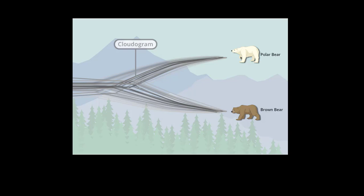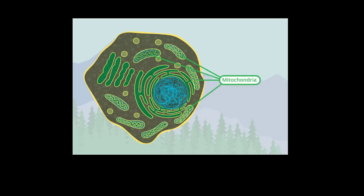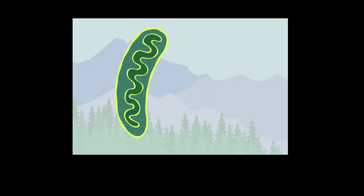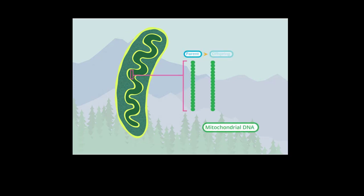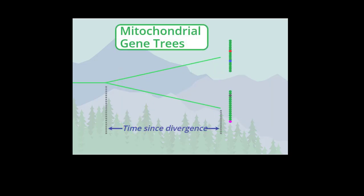Yet for brown bears and polar bears, this diagram still tells only part of the story. While most genes are found on DNA inside the cell's nucleus, a small number are found in cell structures or organelles called mitochondria. As with genes in the nucleus, mitochondrial DNA changes through mutation, and as it's passed down over many generations, changes accumulate. It's possible to compare the mitochondrial DNA from living species to make gene trees.